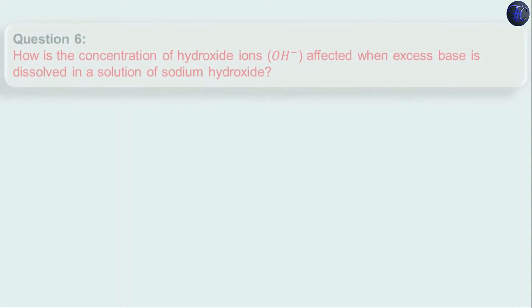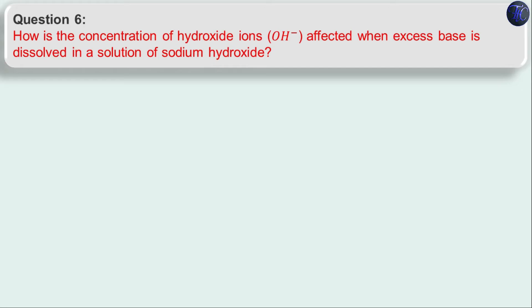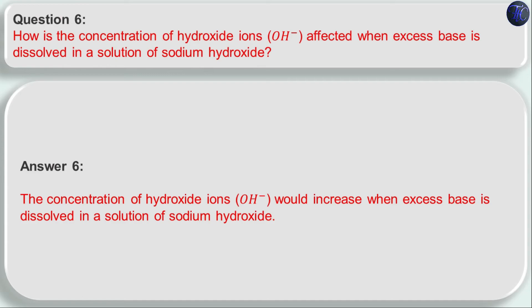Question six: how is the concentration of hydroxide ions (OH⁻) affected when excess base is dissolved in a solution of sodium hydroxide? In activity 2.9 we saw that when sodium hydroxide is dissolved in water, hydroxide ions are produced. If we keep adding excess base, the hydroxide ion concentration will also increase. So the concentration of OH⁻ would increase when excess base is dissolved in a solution of sodium hydroxide.